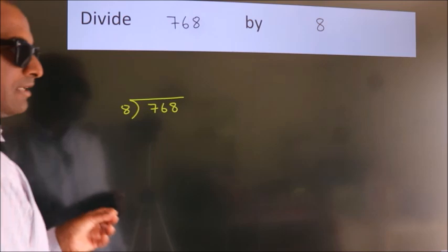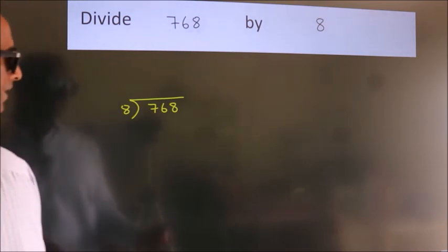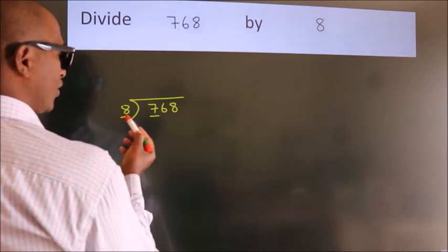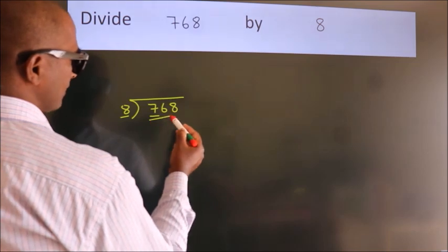This is your step 1. Next, here we have 7, here 8. 7 smaller than 8. So we should take 2 numbers. 76.